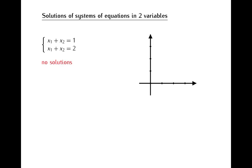Just as we did before, we can have a look at the geometric picture of this system. Since this is a system of two equations, the picture will consist of two lines. But in this case, as you can see, these lines — which are graphs of the two equations — are parallel lines. This is not unexpected: intersection points of the lines would correspond to solutions of the system. Since this system has no solutions, there can be no points of intersection, and if lines do not intersect on a plane, then they must be parallel lines.